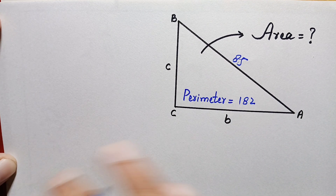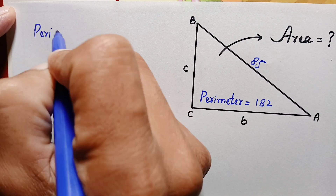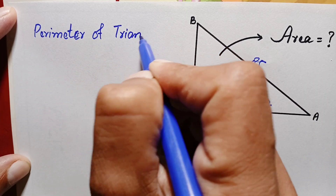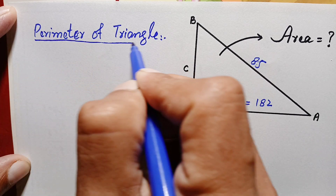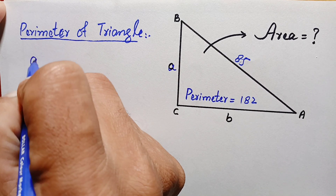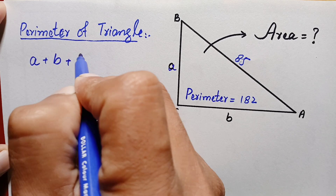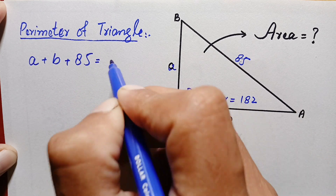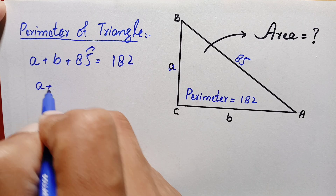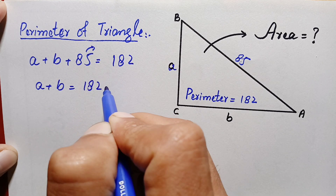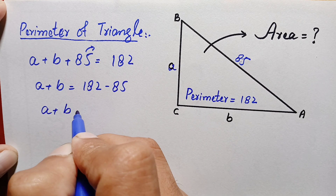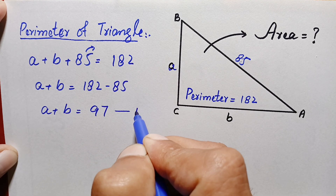So the perimeter of this triangle is the sum of its three sides, which equals 182. Therefore we can write: perimeter of triangle = a + b + 85 = 182. Simplifying, we take 85 to the right-hand side: a + b = 182 − 85 = 97. Let's call this equation number one.